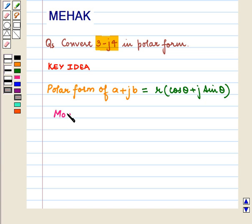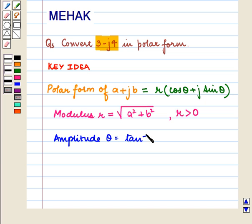Also, modulus r is equal to under root of a square plus b square, where r is strictly greater than 0. And amplitude theta is equal to tan inverse b by a.